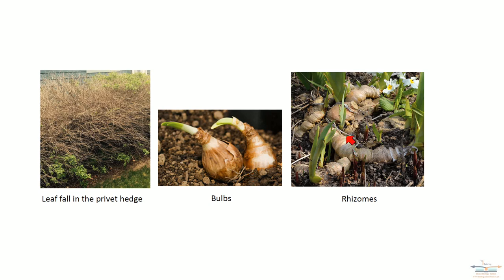The other type of adaptation is something called a rhizome. This structure here is a rhizome. Again, it's a structure that remains dormant in the soil through the winter months but can reform plants when spring and summer comes. Rhizomes, similar to bulbs, remain dormant in the soil and reform plants when spring comes.